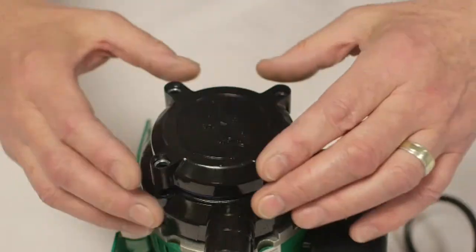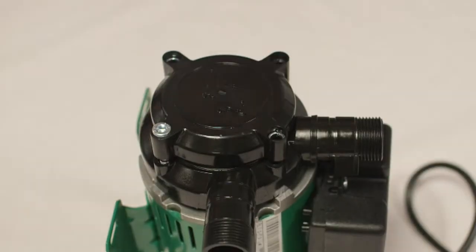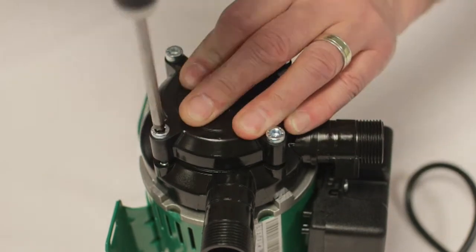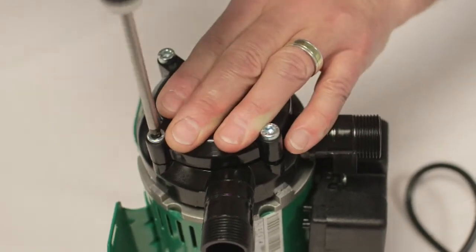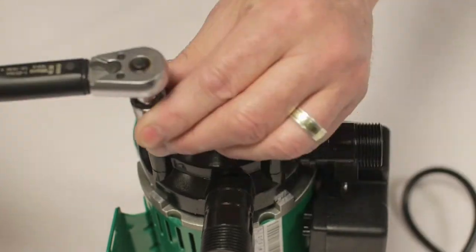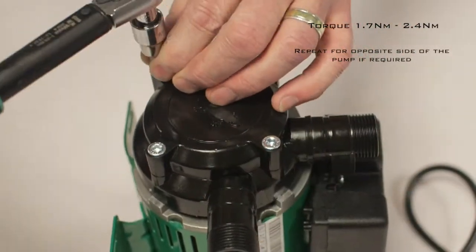Refit cover, ensuring it is level. Secure cover with new M6 cap screws and spring washers by driving diagonally opposite in stages using 5mm hex key, and ensure they are tightened to the correct torque.